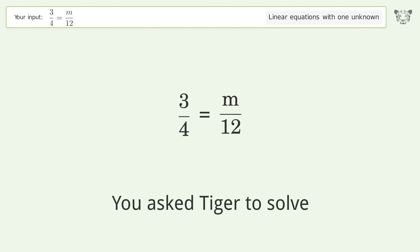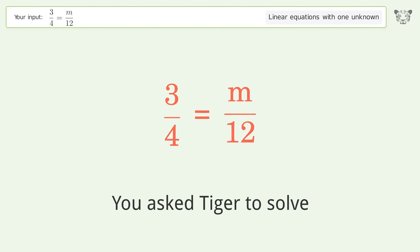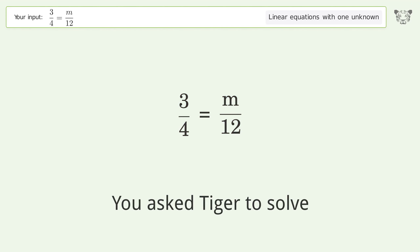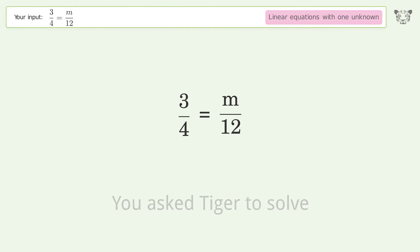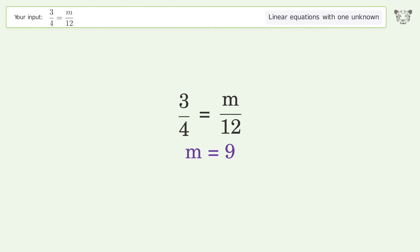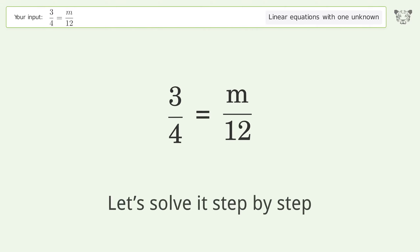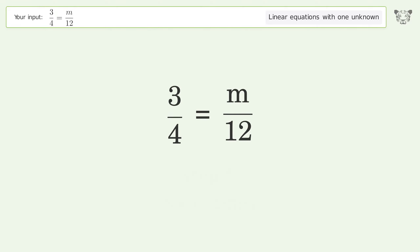You asked Tiger to solve this — it deals with linear equations with one unknown. The final result is m equals 9. Let's solve it step by step: swap sides.